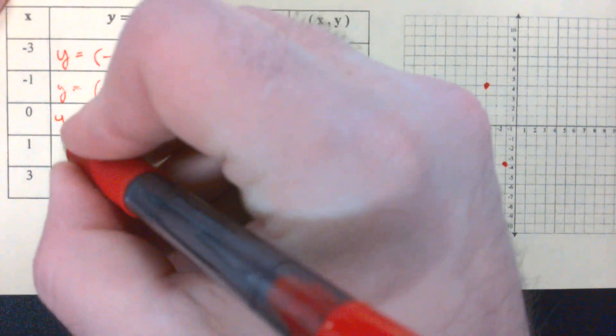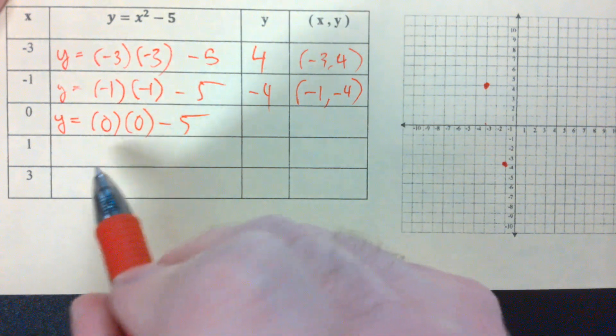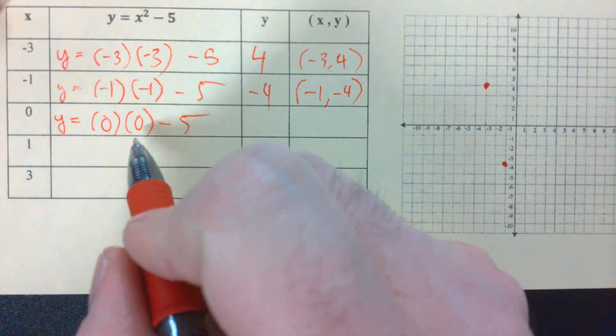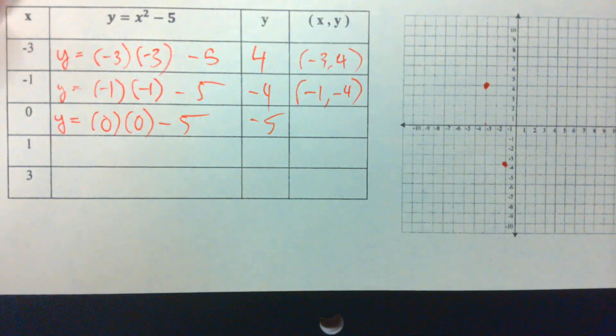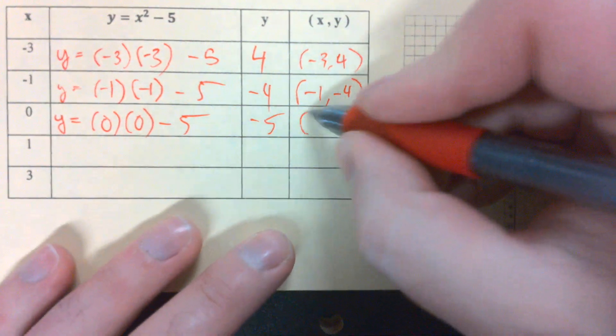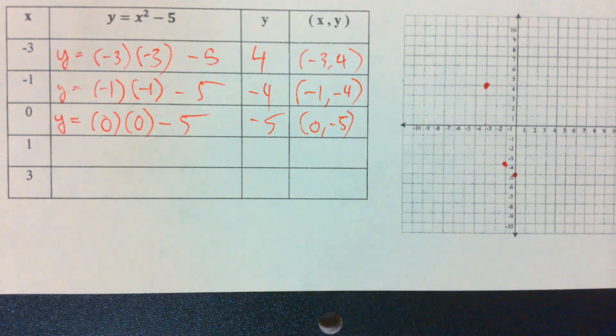We can plug in a 0. Y is equal to 0 times 0 minus 5. Again, we know 0 times 0 is just 0. And 0 minus 5 gives me what? Negative 5. Think of that. There's my y-intercept right down there at negative 5.